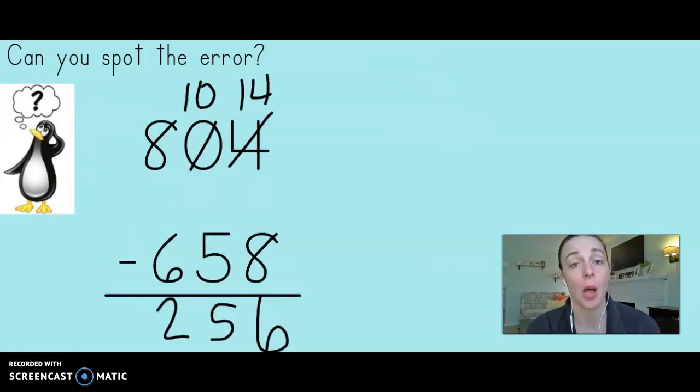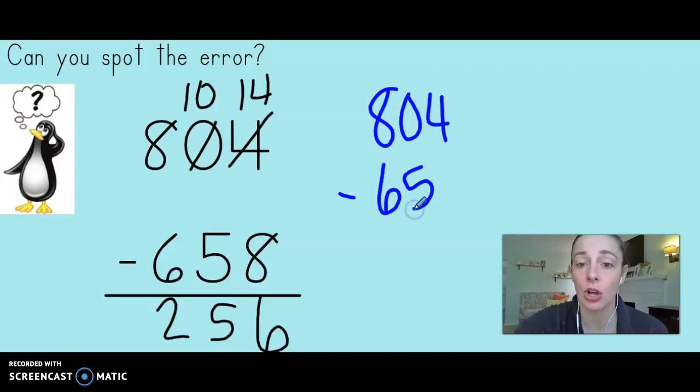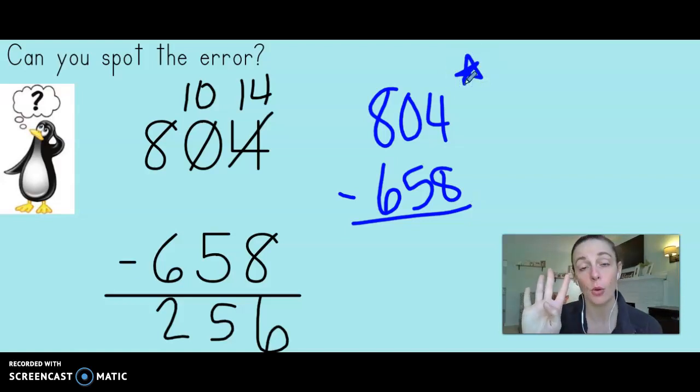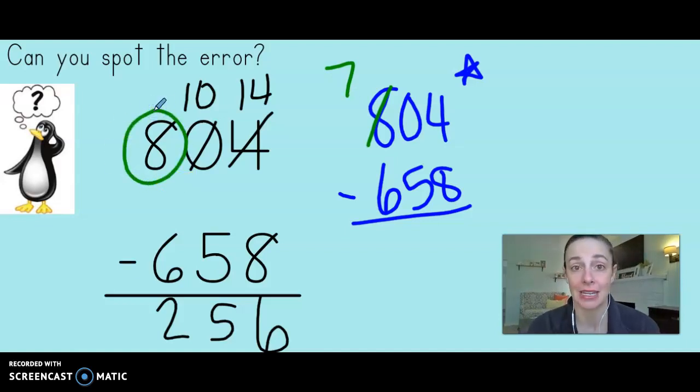Let's try one more to try to help Puzzled Penguin. So we have 804 minus 658. You know, since it's Puzzled Penguin, I think I'm going to start by writing the problem because I know he's probably going to make a mistake. Let's start and let's see if we can spot the mistake that Puzzled Penguin makes. So in the ones place, we have four minus eight. Can I do that? If I have four, can I give you eight? No. So I go next door to my neighbor. My neighbor doesn't have any, does he? That means I'm going to need to start ungrouping in the hundreds. Let's ungroup one of our hundreds. Puzzled Penguin didn't do that part. Look, he kept it as eight. He didn't ungroup any of the hundreds. I think that might be where his mistake was. And that gives us 10 tens.